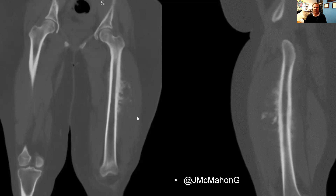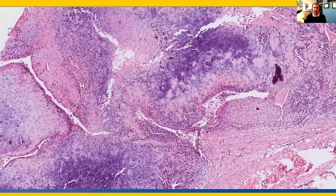The tumor is quite concerning for an osteosarcoma. So tissue was obtained, and here we have a chondroosseous neoplasm with peripheral condensation. The central cartilaginous areas converge along the edges — along the periphery — to ossify.